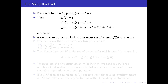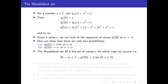If we fix the parameter C and look at the sequence C, C² + C, C⁴ + 2C³ + C² + C, etc. — where each step you take the previous value, square it and add C — there are two possibilities for behavior. Either the values stay bounded, remaining within the disk of radius 2 centered at the origin (|QCⁿ(0)| ≤ 2 for all n), or the absolute values diverge to infinity as n increases. As soon as one value has absolute value bigger than 2, the rest will grow and go to infinity.